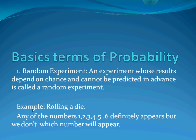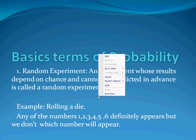For example, rolling a die. Any of the numbers 1, 2, 3, 4, 5, 6 will definitely appear, but we don't know which number will appear. So rolling a die is definitely a random experiment.